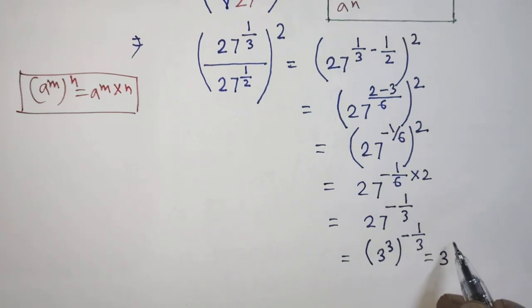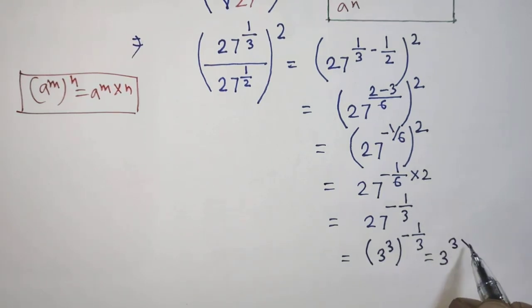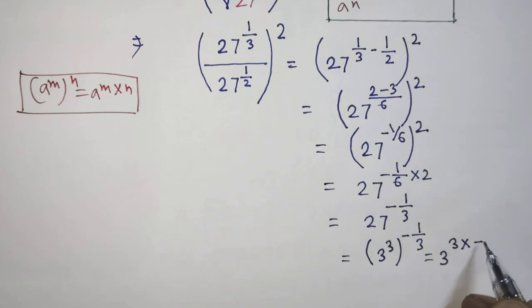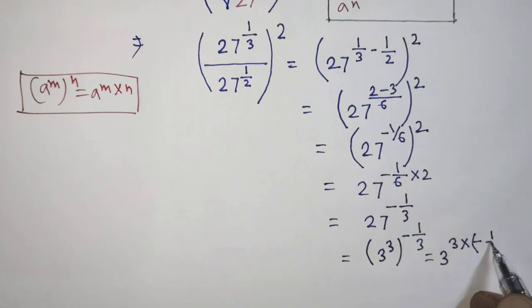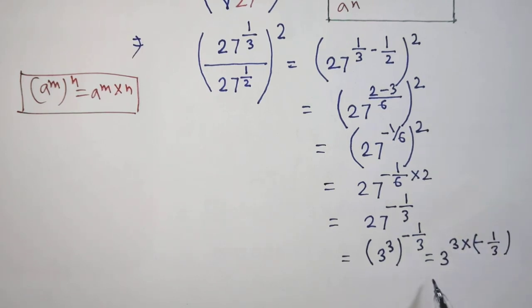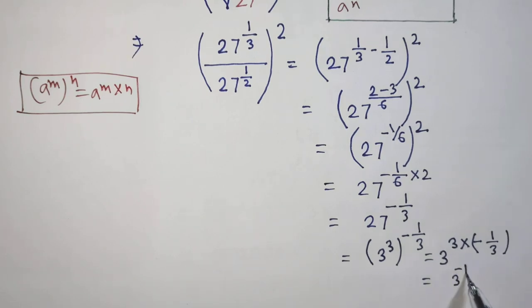Then it will be 3 to the power 3 times minus 1 over 3, which gives us 3 to the power minus 1.